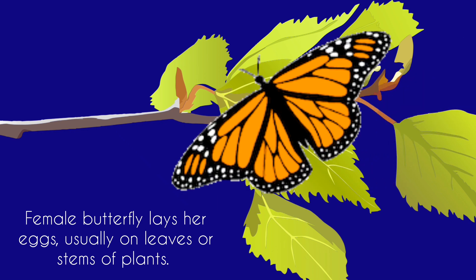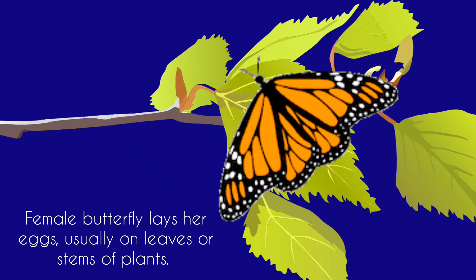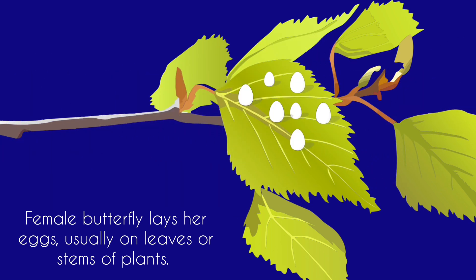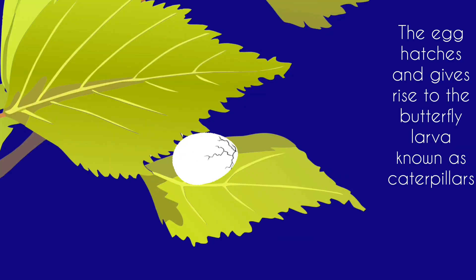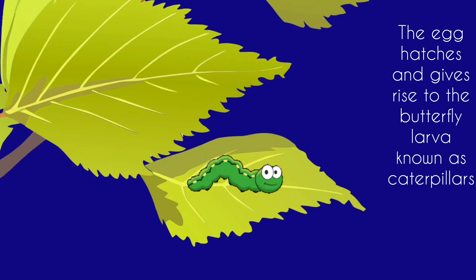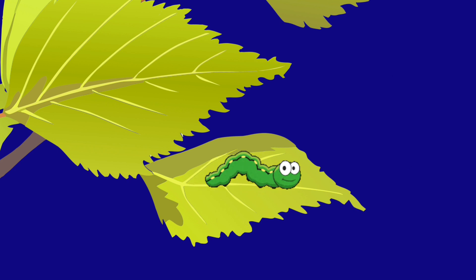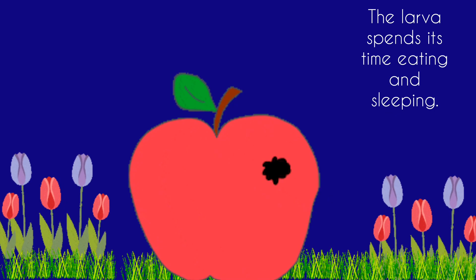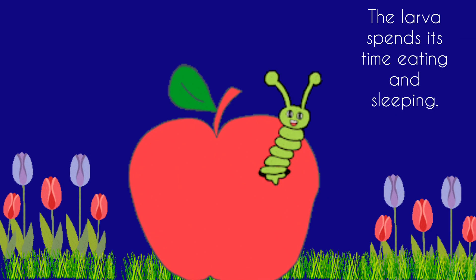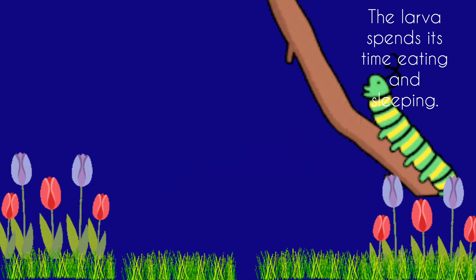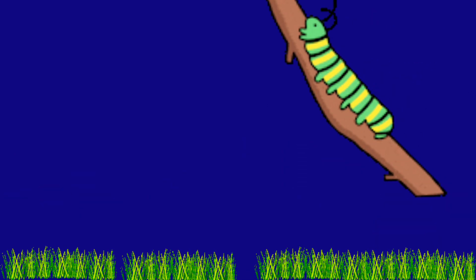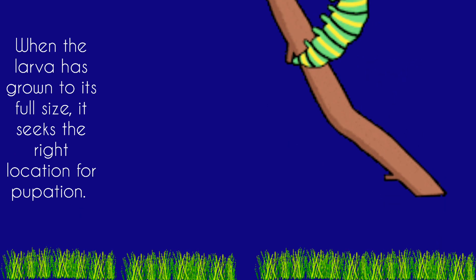Butterfly lays eggs on the leaves. What comes out of the egg is called a caterpillar. The caterpillar eats and sleeps. When the caterpillar is big enough, it covers itself in a cocoon.